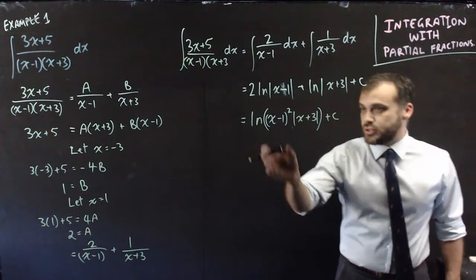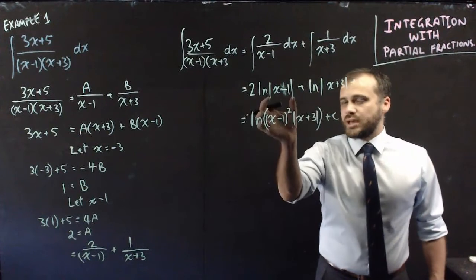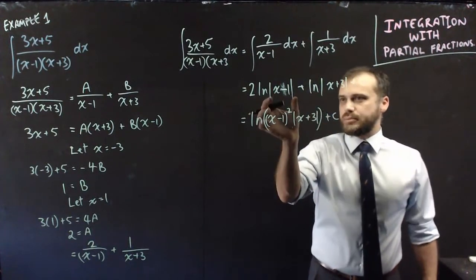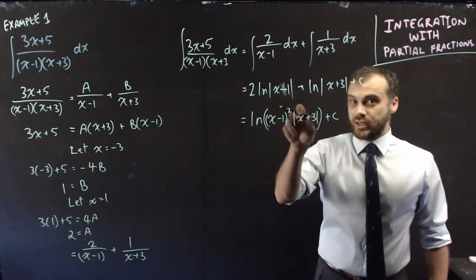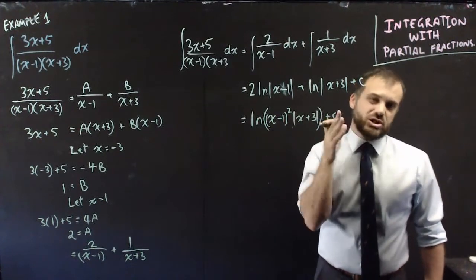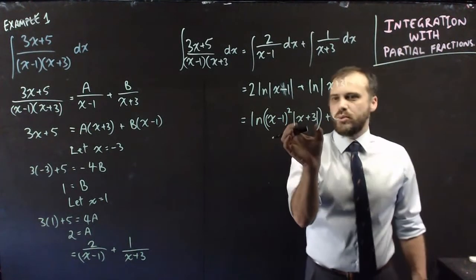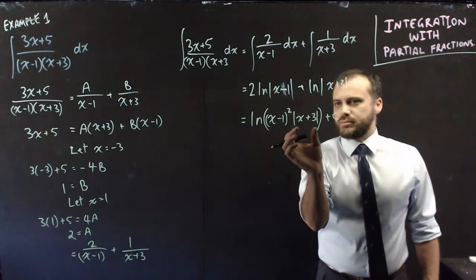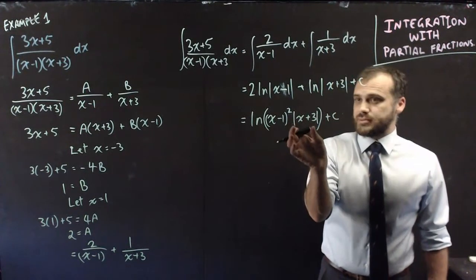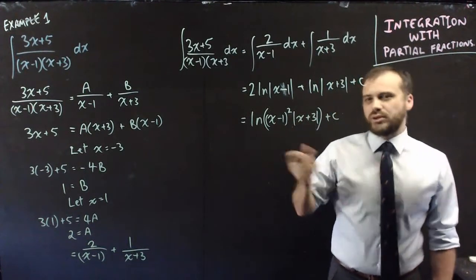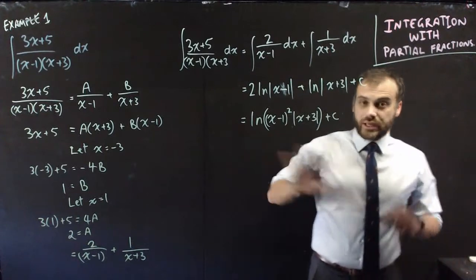An interesting thing happens when you do that. That x minus 1, we can stop putting it in absolute values. Because we squared it, it's going to be a positive value, so we don't need to specify that it's an absolute value anymore. Whereas this x plus 3 being multiplied by it, that needs to stay as an absolute value. We didn't change it by squaring it or anything like that.